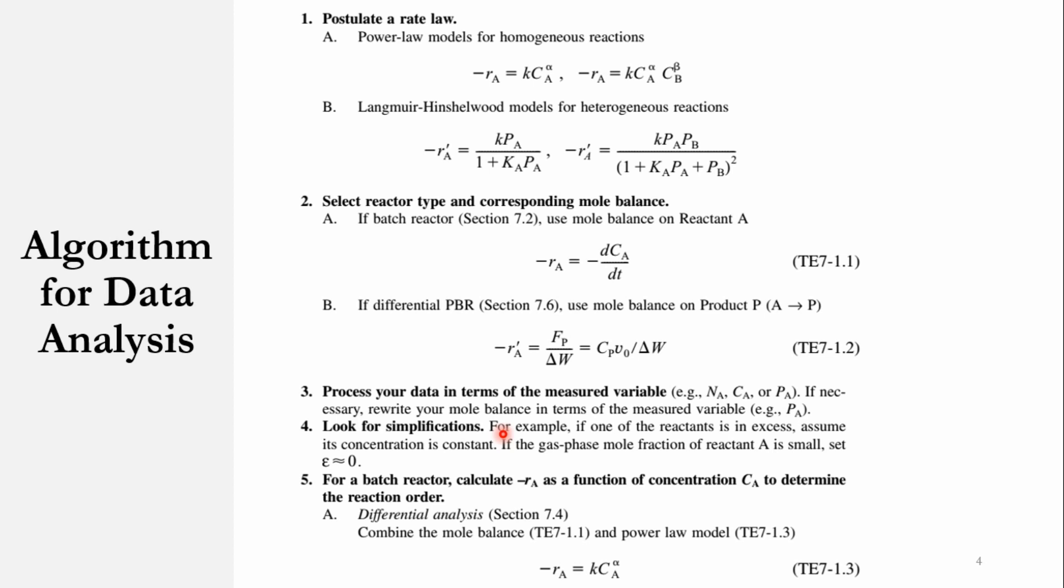Then number 4 is to simplify the system whether it is possible or not. For example, if one of the reactants is in excess—if you remember our example number 5.1 or 5.2 where we had used batch reactor and CSTR, we had said that water is in excess—so we have assumed that its concentration is constant and we had taken it out of the system. That is also called excess method to determine it, and we will be studying that method in this chapter. If the gas phase mole fraction of reactant A is small, then we can assume that epsilon is approximately equal to zero. If you remember, epsilon is Y_A0 times delta. If reactant A concentration is small, it means that value of epsilon will approach zero.